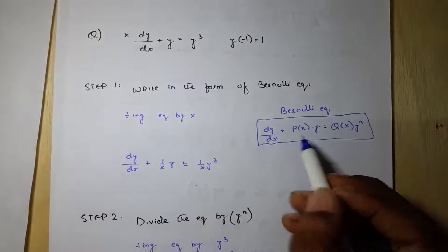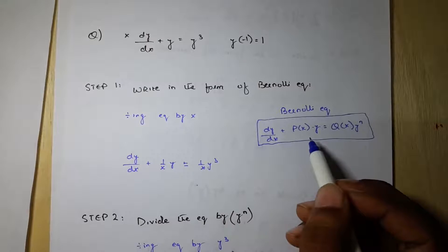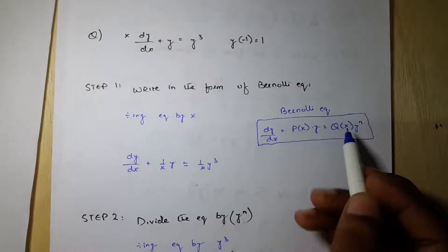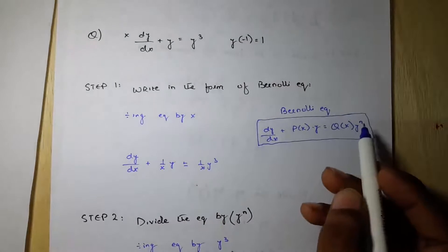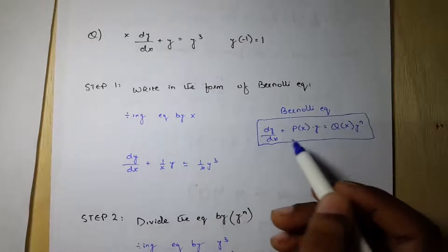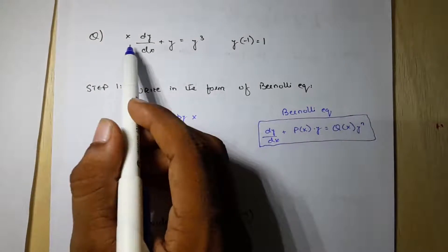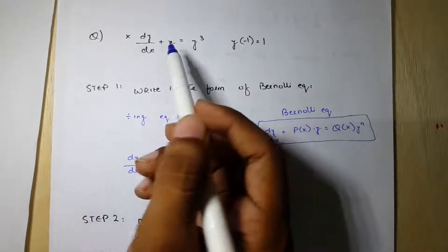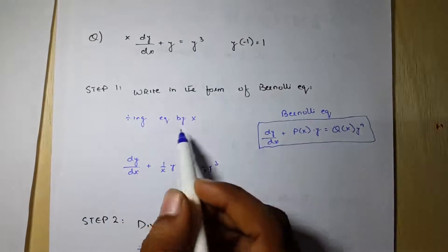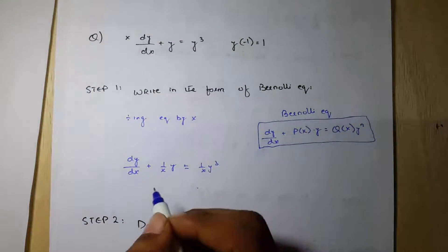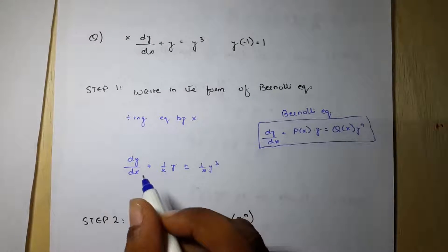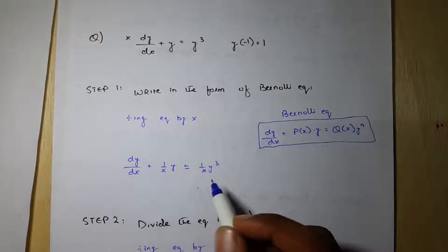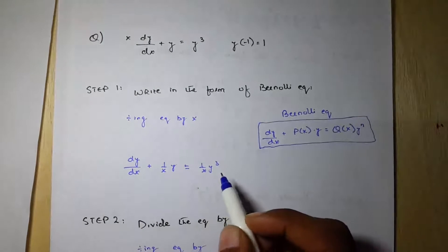The Bernoulli equation is dy/dx plus a function of x times y equal to another function of x times y to the power n. As you can see that there is an x here; to eliminate x, I am dividing the whole equation by x. So our new equation will be dy/dx plus (1/x)y equal to (1/x)y cubed.